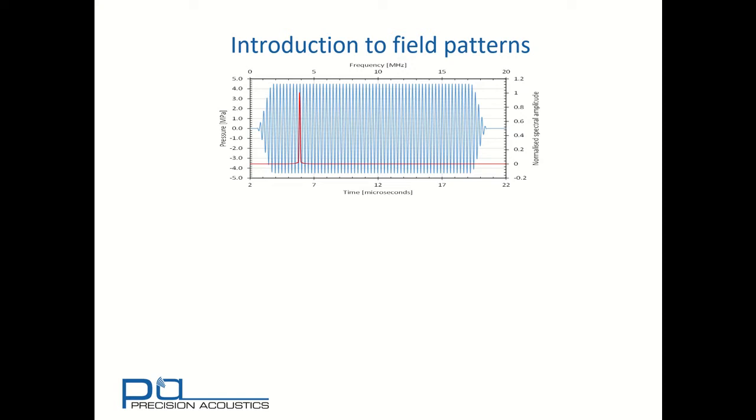Similarly when it comes to spatial variations an ultrasonic transducer's output varies in three-dimensional space. Again for ease of visualization we'll be considering 2D variations only in this tutorial and these are normally cross sections of a transducer's output pattern.